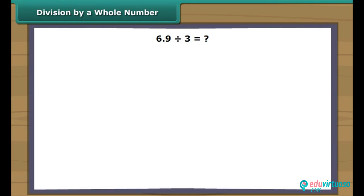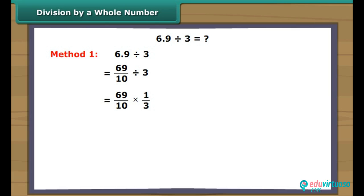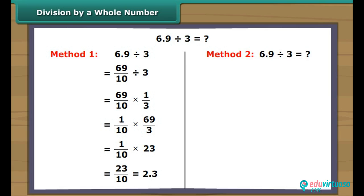Division by a whole number. How will you divide a decimal number 6.9 by a whole number, say, 3? Such numbers can be divided by 2 methods. Method 1: Write 6.9 as 69/10. Thus, we get 69/10 × 1/3, which can be written as 1/10 × 69/3. On simplifying, we get 1/10 × 23 = 23/10 = 2.3. Method 2: The decimal number is considered as a whole number and divided by 3, giving 23. Since there is one digit to the right of the decimal point in 6.9, we place the decimal in 23 such that there is one digit to its right. We get 2.3 again.